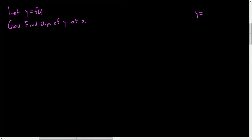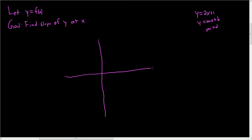Well, for straight lines it's easy. If you have y equals 2x plus 1, then that matches y equals mx plus b, and so we see the slope is m equals 2. So in calculus, the notion of a derivative tries to extend the concept of slope to things other than straight lines.